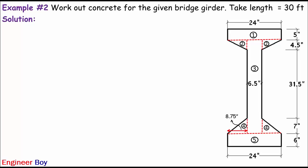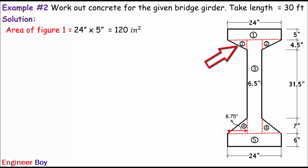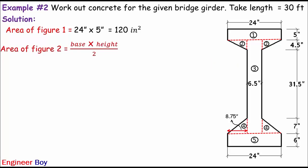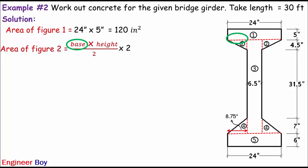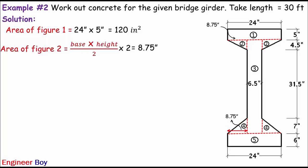Now I can calculate the sectional area for each segment. Area of figure one is 24 inches — the breadth of the girder — times the thickness of that portion, which is 5 inches. So 24 times 5 gives area figure one equals 120 square inches. For figure two, those are right-angled triangles, so the area is one-half times base times height. Since there are two of them, we multiply by two. Area figure two equals 8.75 inches times 4.5 inches divided by 2, times 2, which gives 39.375 square inches.